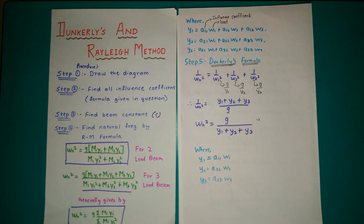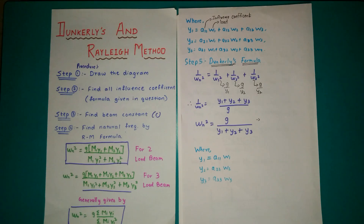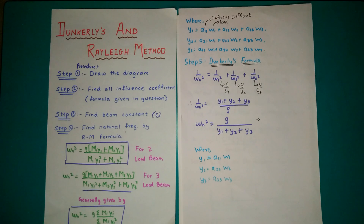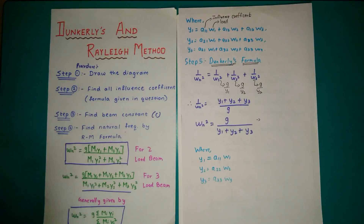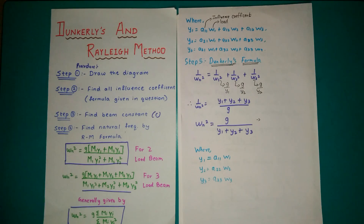So let's start with the procedure to solve this numerical. The first step is to draw the diagram — read the question properly and draw the diagram correctly by looking at all the terms properly. Then step 2 involves finding all the influence coefficients. The formula for the influence coefficient will be given in the question. You just have to write down the formula and put in the terms properly by looking at the diagram.